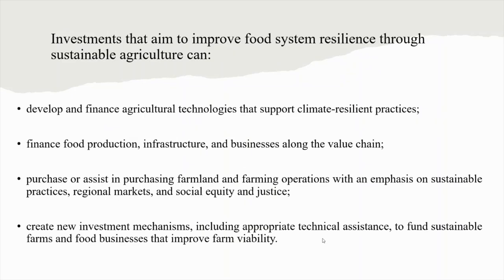Investments that aim to improve food system resilience through sustainable agriculture can: develop and finance agricultural technologies that support climate-resilient practices such as improved soil health, efficient water use and increased water holding capacity, or that manage and promote agricultural diversity on farms and in markets; finance food production infrastructure and businesses along the value chain, including processing facilities and transport innovations in regional markets; purchase or assist in purchasing farmland with an emphasis on sustainable practices, regional markets and social equity and justice; and create new investment mechanisms including appropriate technical assistance to fund sustainable farms and food businesses.